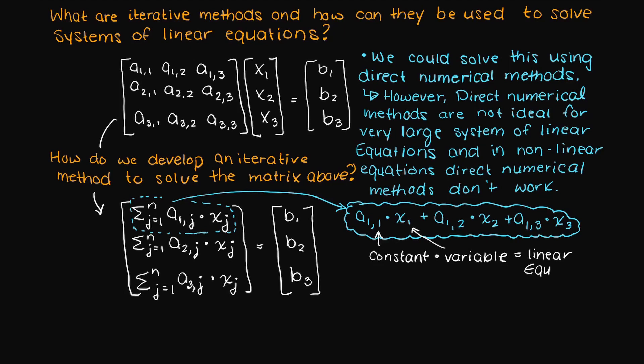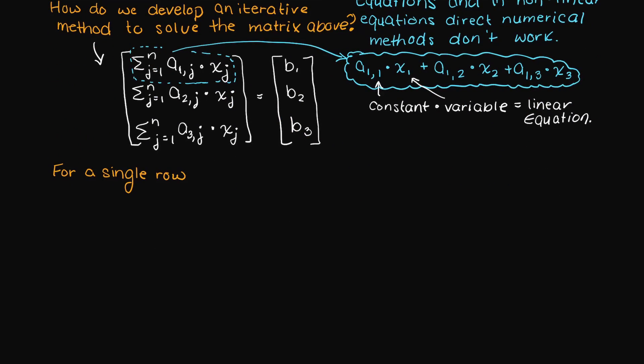So let's focus on one single row for right now and let's call that generic row i. So what is our goal here?